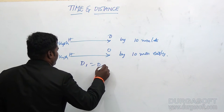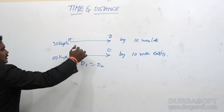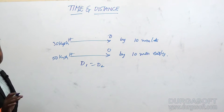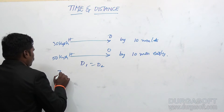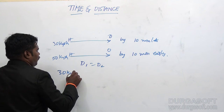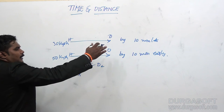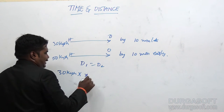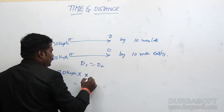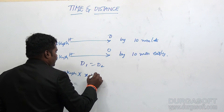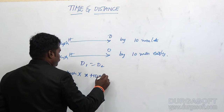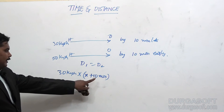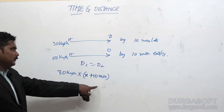Since distance is the same both ways, D1 equals D2. Using distance equals speed into time: 30 × (X + 10) equals 50 × (X − 10), where X is the actual time in minutes. The +10 accounts for being 10 minutes late and the −10 for being 10 minutes early.